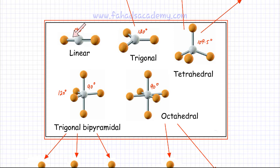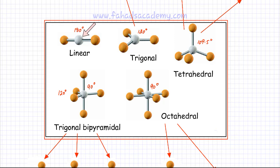If you have two electron densities — two bonding pairs of electrons — the shape is going to be linear. One bond would repel the other bond and it's going to be on completely the opposite side. The arrangement is always around the central atom, which is shown in gray over here. The angle the bonds would be making would be 180 degrees. So this is your first basic shape.